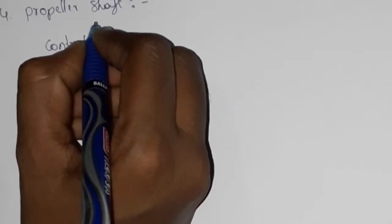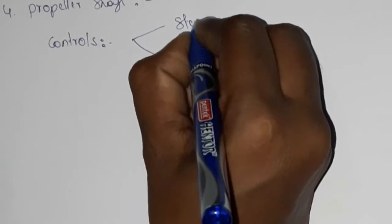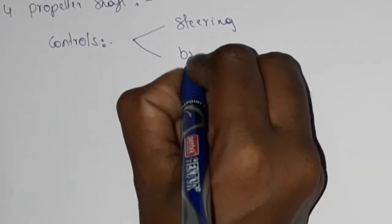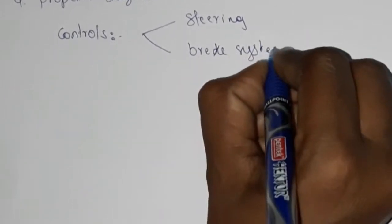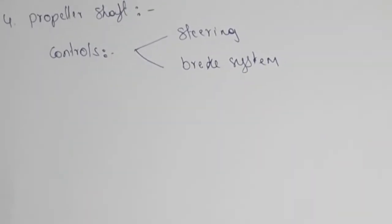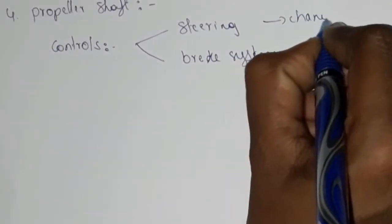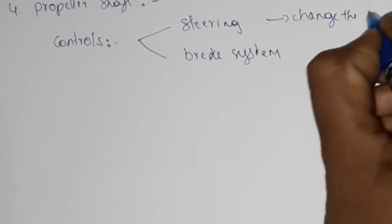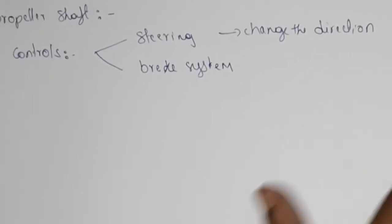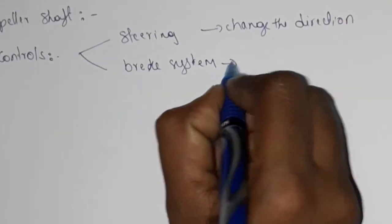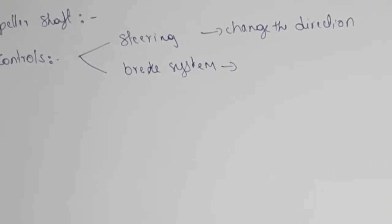Controls include the basic steering system and brake system. The steering system changes the direction of the vehicle, while the brake system is used to stop or slow down the vehicle.